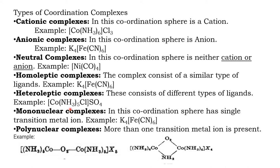Another classification is mononuclear complexes, where the coordination sphere contains only one central metal atom or ion — for example, a complex where the central metal atom is Fe (only one Fe). In the case of polynuclear complexes, the coordination sphere contains two or more metal atoms or ions. For example, a complex containing two cobalt atoms is a polynuclear complex.